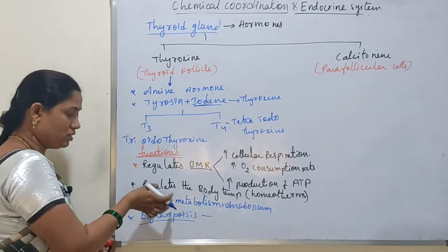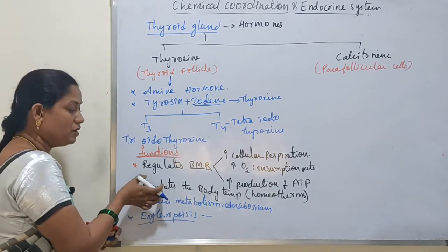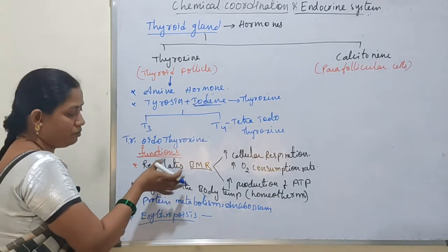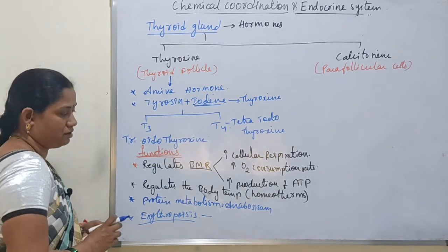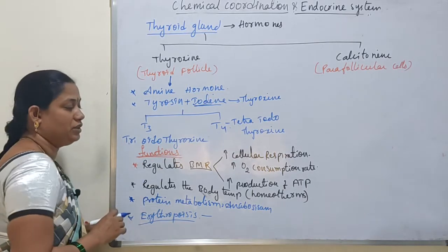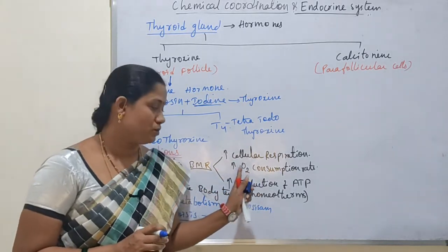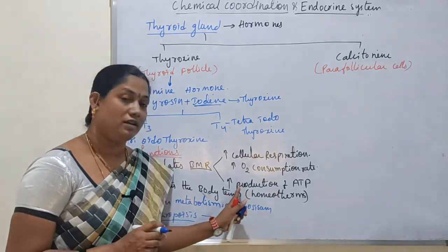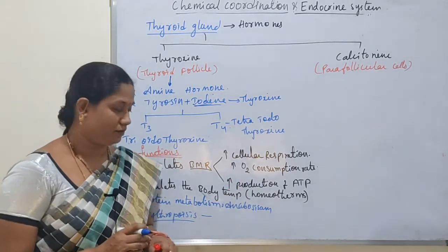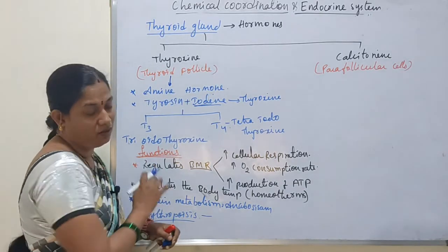Thyroxine also helps in protein metabolism. Mainly, it regulates the basal metabolic rate by increasing cellular respiration and increasing the production of ATP.